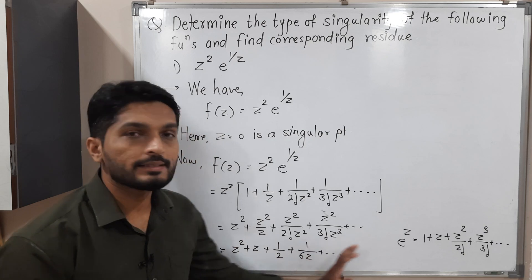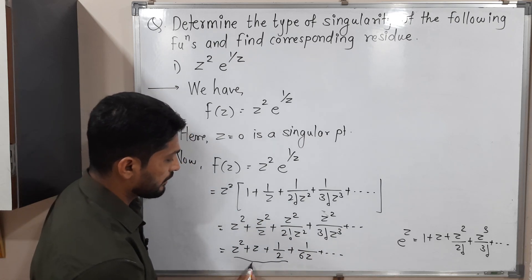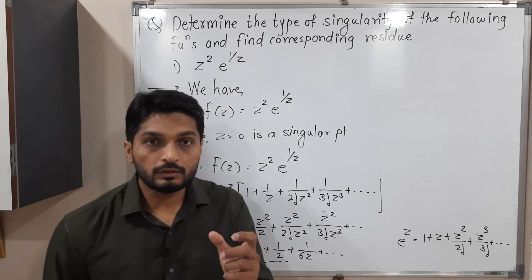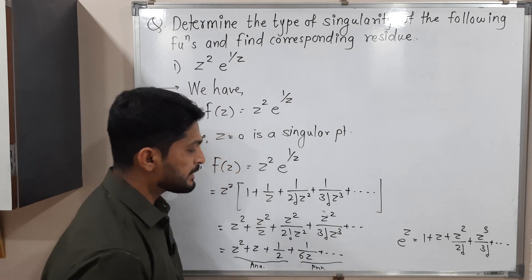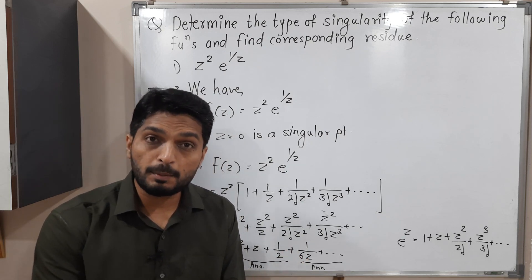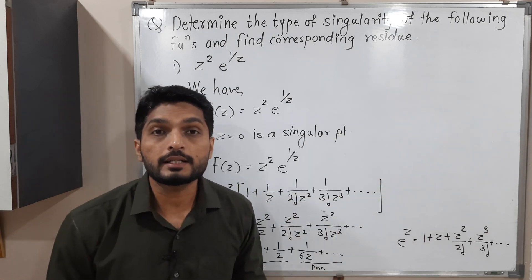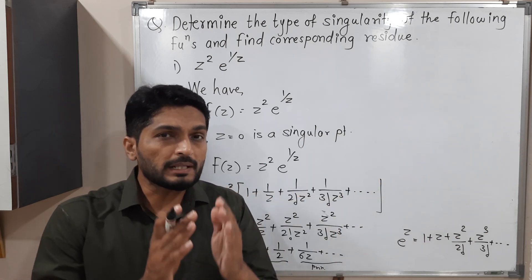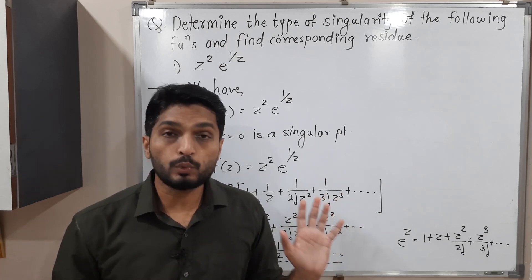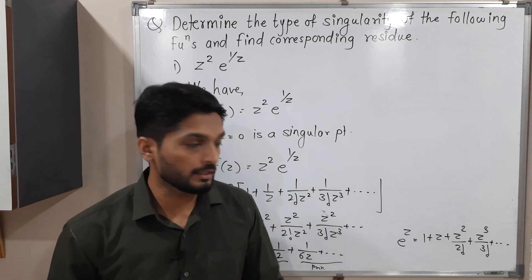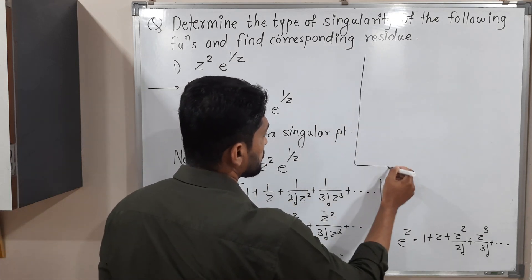This gives us the Laurent series. The analytic part contains terms where z appears in the numerator, and the principal part contains terms where z appears in the denominator. The principal part is crucial: if it has infinitely many terms it is an isolated essential singularity; if finitely many terms it is a pole of order n; if no terms it is a removable singularity. Here the principal part has infinitely many terms.